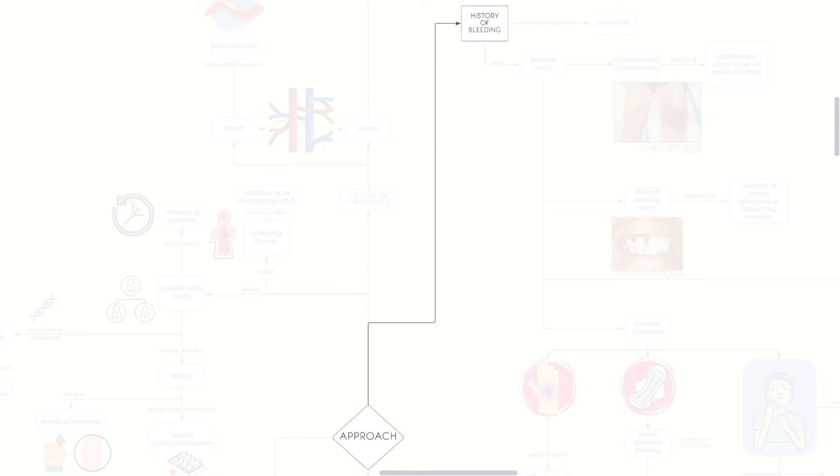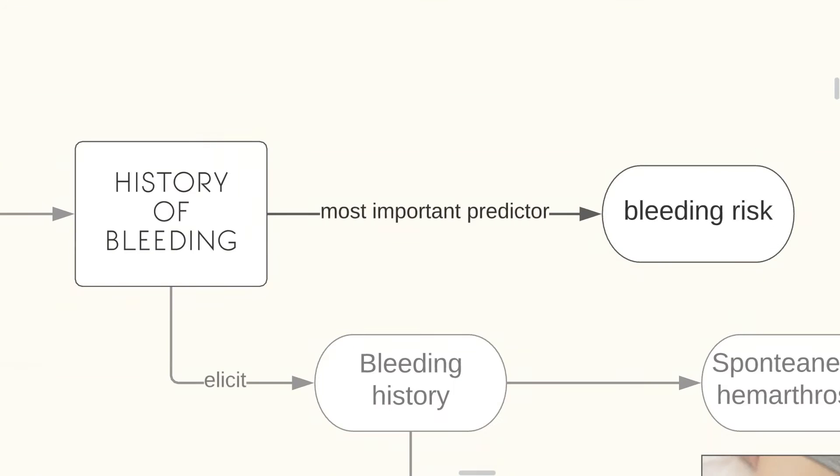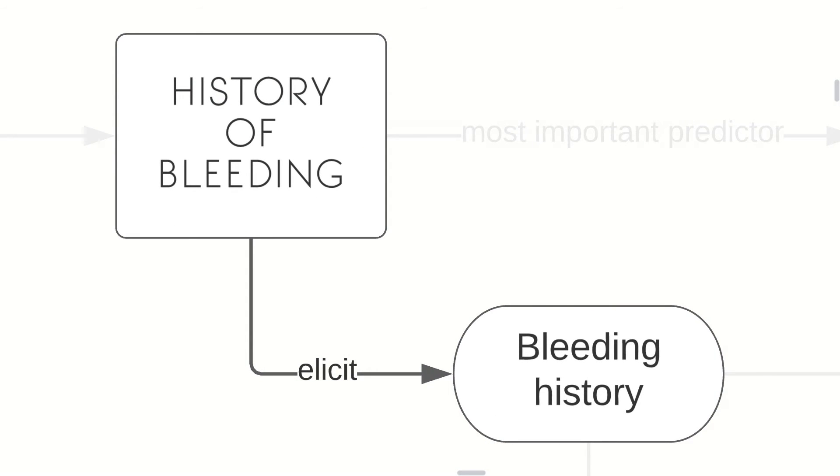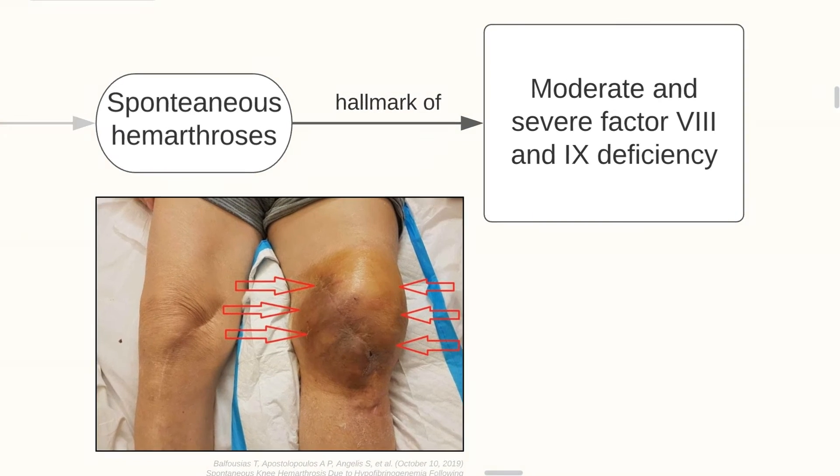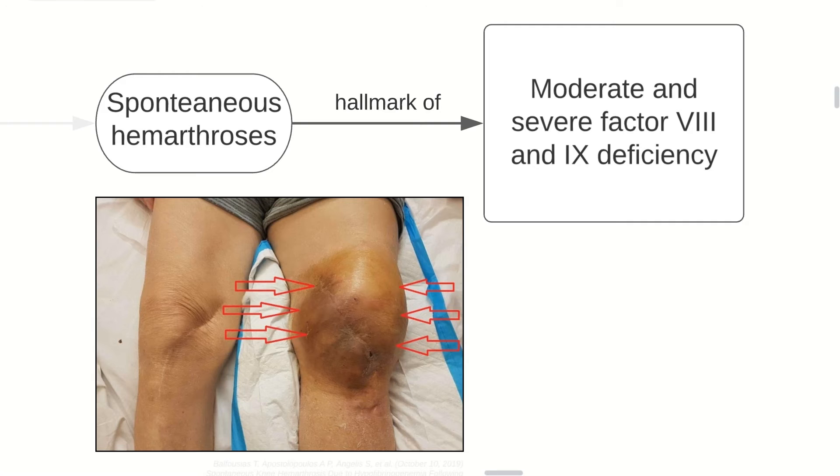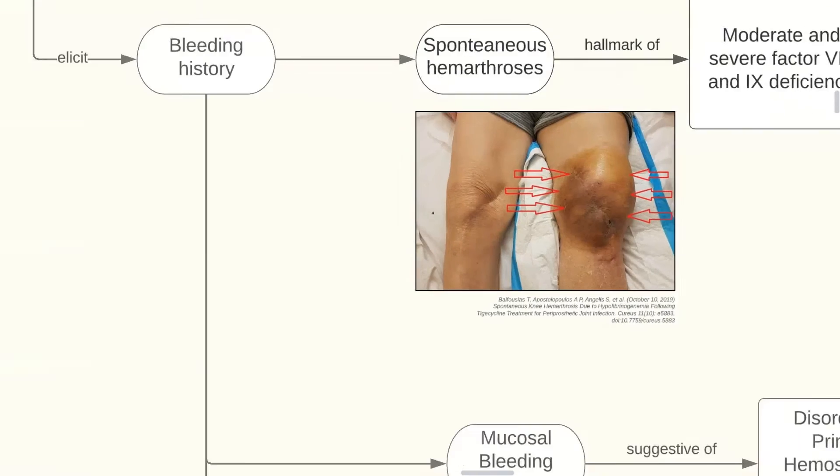Now for our approach to the history of bleeding. The history of bleeding is the most important predictor of bleeding risk, therefore it is important to elicit a bleeding history. Spontaneous hemarthrosis, as seen in this picture, may be the hallmark of a moderate and severe factor VIII and IX deficiency.